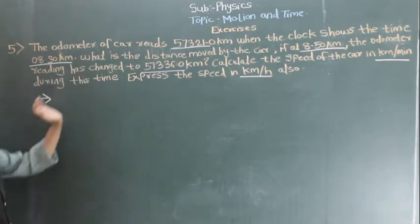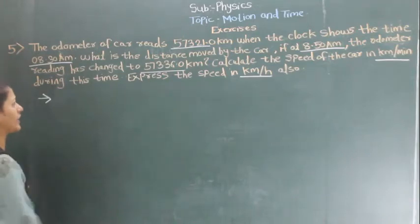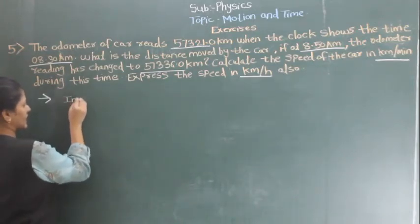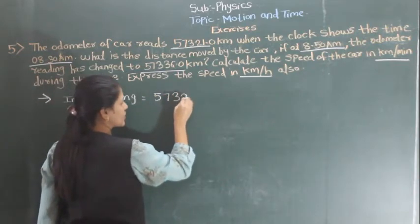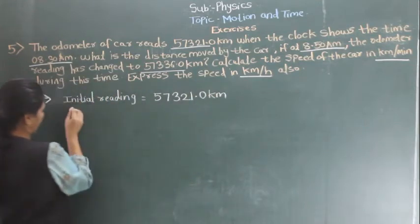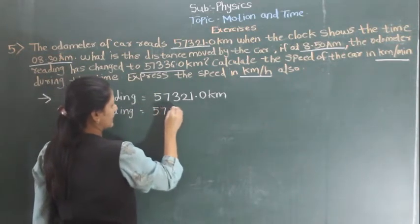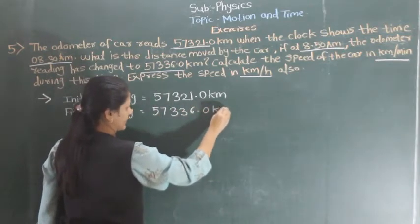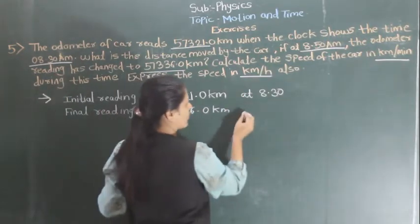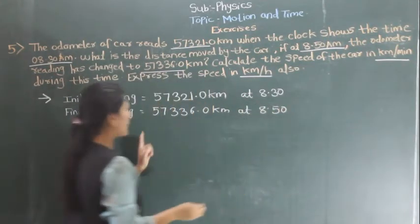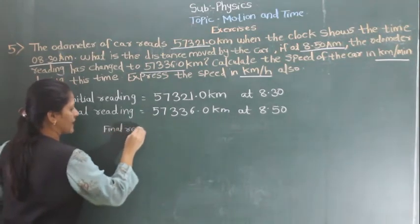Now see the solution. What will be the solution? This is the initial reading of the odometer and this is the final reading. So first we write the initial reading. The initial reading is 57,321 km and the final reading is 57,336 km. This was at 8:30 and this was at 8:50. First we will calculate the distance: final reading minus initial reading.